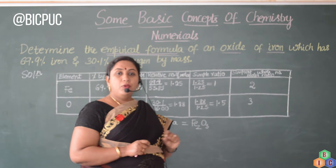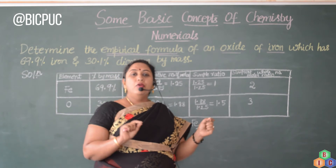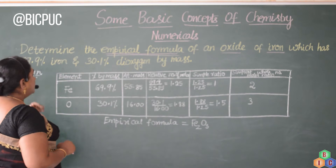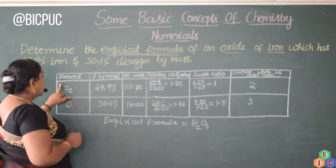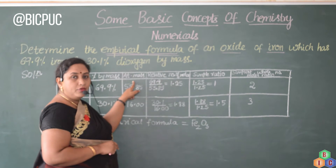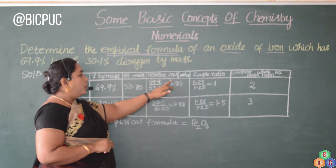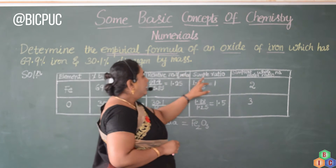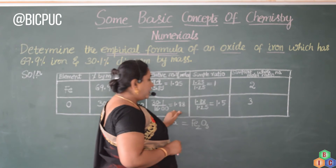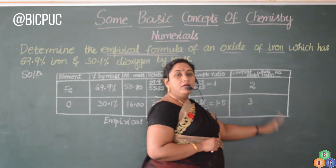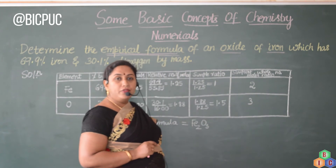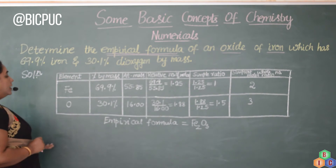To find out the empirical formula, we need to make a tabulated column and go ahead with our calculation. The columns should be: element, percent by mass of the element (both given in the problem), atomic mass (which we should already know), relative number of moles, simple ratio, and finally the simplest whole number ratio.